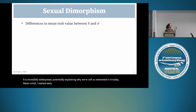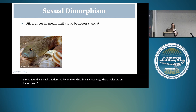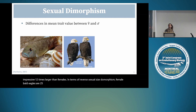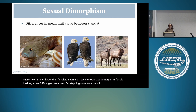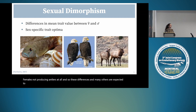There are examples throughout the animal kingdom. Here's the cichlid fish, where males are an impressive 12 times larger than females. In terms of reverse sexual size dimorphism, female bald eagles are 25% larger than males. Stepping away from overall differences in body size, we also have examples like the impressive antlers of male elk, with females not producing antlers at all. These differences are expected to reflect adaptive differences in the sex-specific optimum of the trait and often arise as a result of sexual selection.